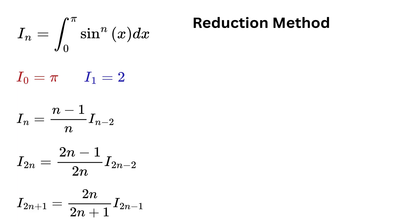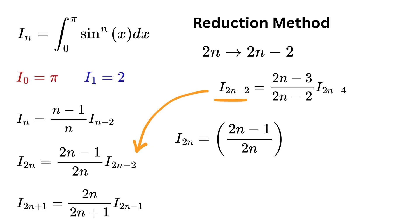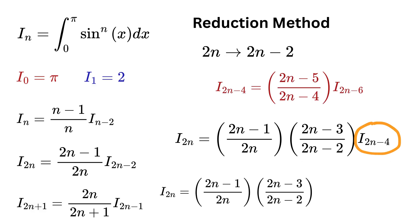Next we will use the reduction technique to make this I_2n as a function of I_0. We have this relationship. Now just substitute 2n as 2n-2, and thereby I_(2n-2) can also be written as (2n-3)/(2n-2) times I_(2n-4), right?